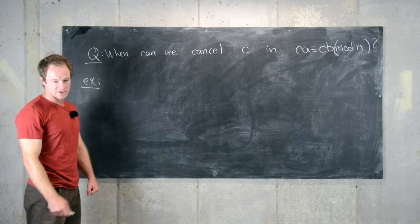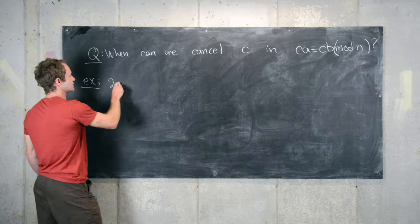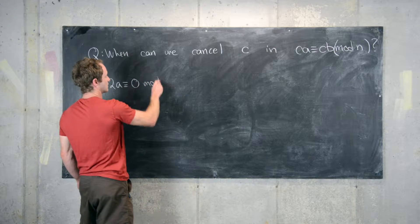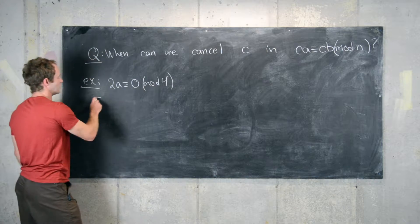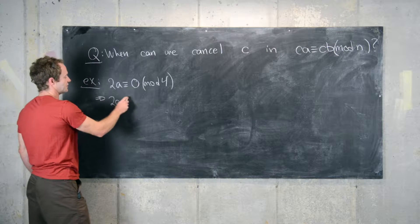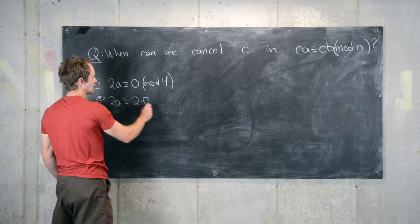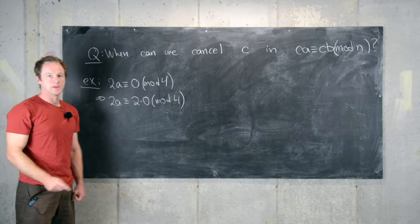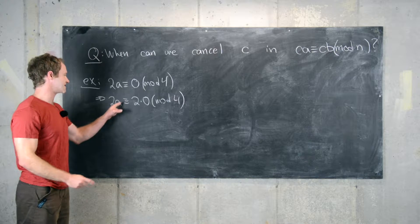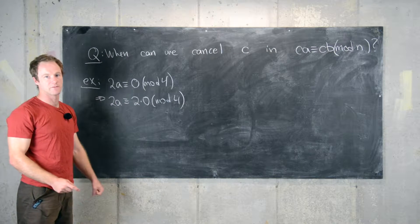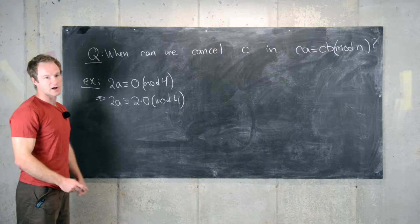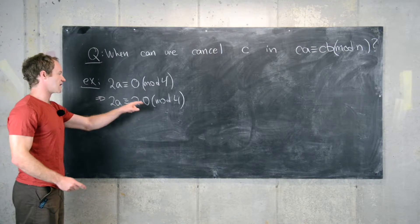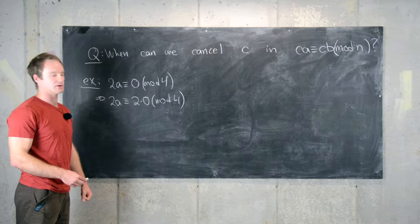For example, if we have 2 times A is congruent to 0 mod 4 — notice that's the same thing as saying 2 times A is congruent to 2 times 0 mod 4 — in this case we can't just cancel the 2 and say that A is congruent to 0 mod 4. Sure, A is congruent to 0 mod 4 is a solution, but A is congruent to 2 mod 4 is also a solution.